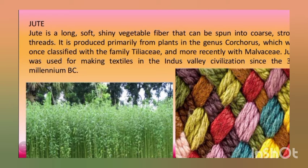Another plant fiber which is also a natural fiber is jute. Jute is the second most used product and is mainly biodegradable, which is why it is preferred today — plastic bags and polythene are banned, and it is advised to use jute bags instead. Jute is popularly known as golden fiber because it is golden in color and shines.